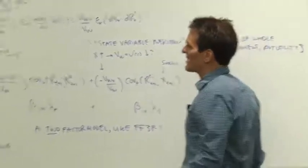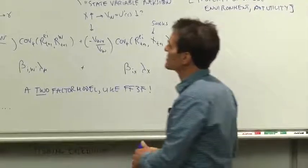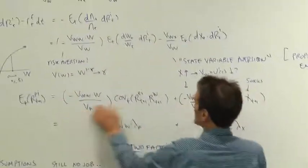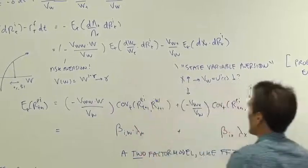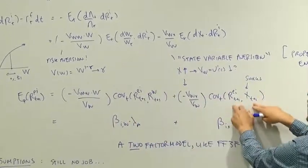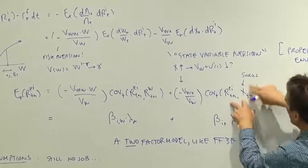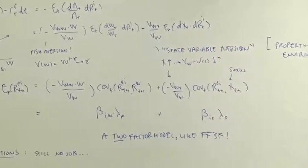Or, now writing out the same thing in discrete time notation, the same VWW term times the covariance of return with the return on wealth, and the VWX term times the covariance of return with this X guy, or if in fact shocks to the X guy, which is what DX is.